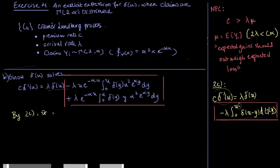That minus lambda multiplied by the integral from 0 to u of delta of u minus y integrated with respect to the distribution function, which in this case is continuous and therefore we have the density that we can just multiply inside here.